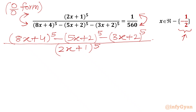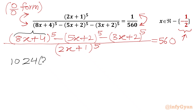The right-hand side will be 560. Now from the first bracket of the numerator, which is 8x+4, the factor 4 is common. So we will take 4 common — it will come out as 4^5, which is 1024. Then in the bracket we will get (2x+1)^5.